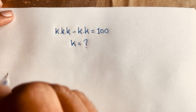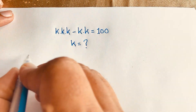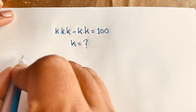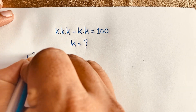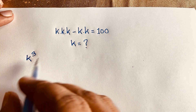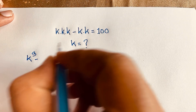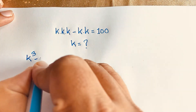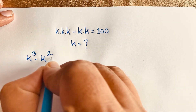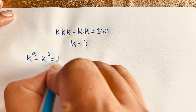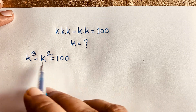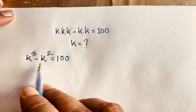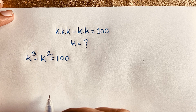Our question is k times k times k, which evaluates to k to the power 3. Then minus k times k, which is k squared, is equal to 100. So our equation is k³ - k² = 100.